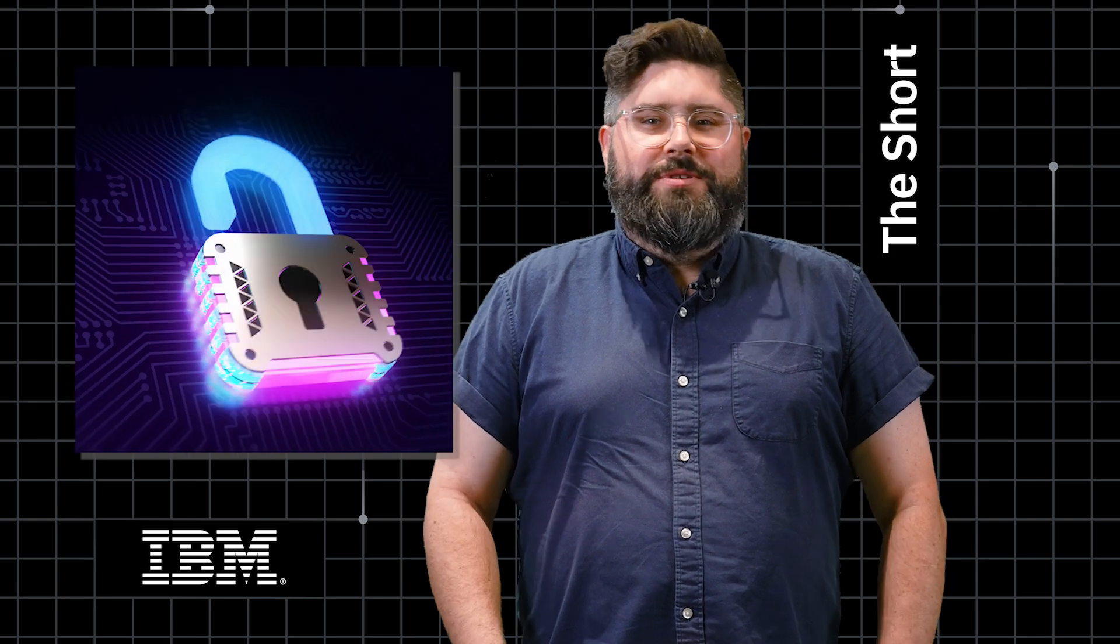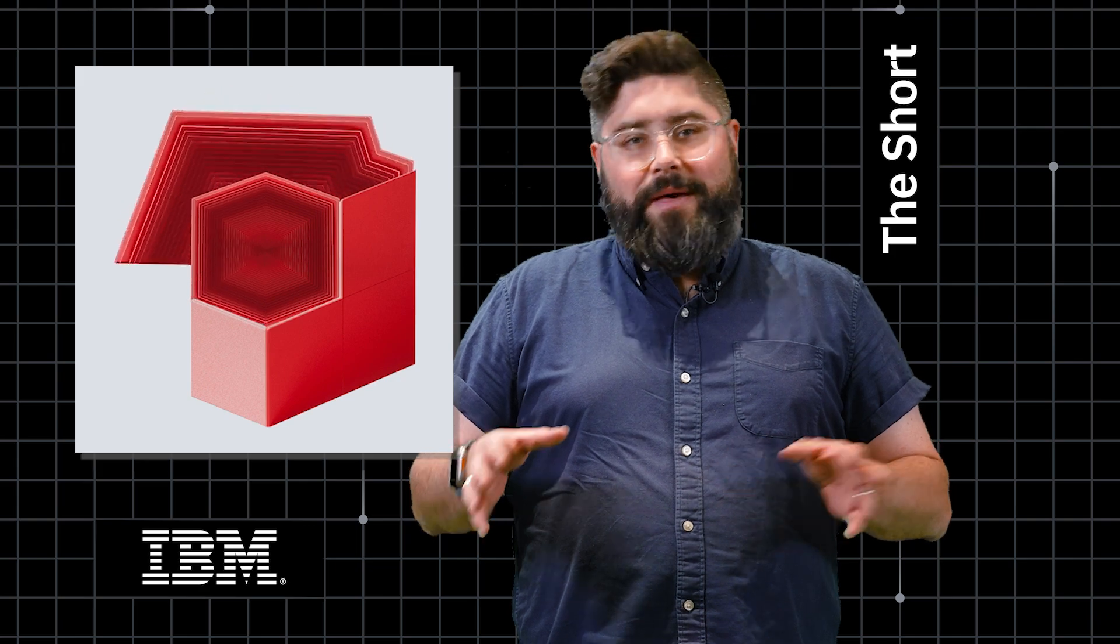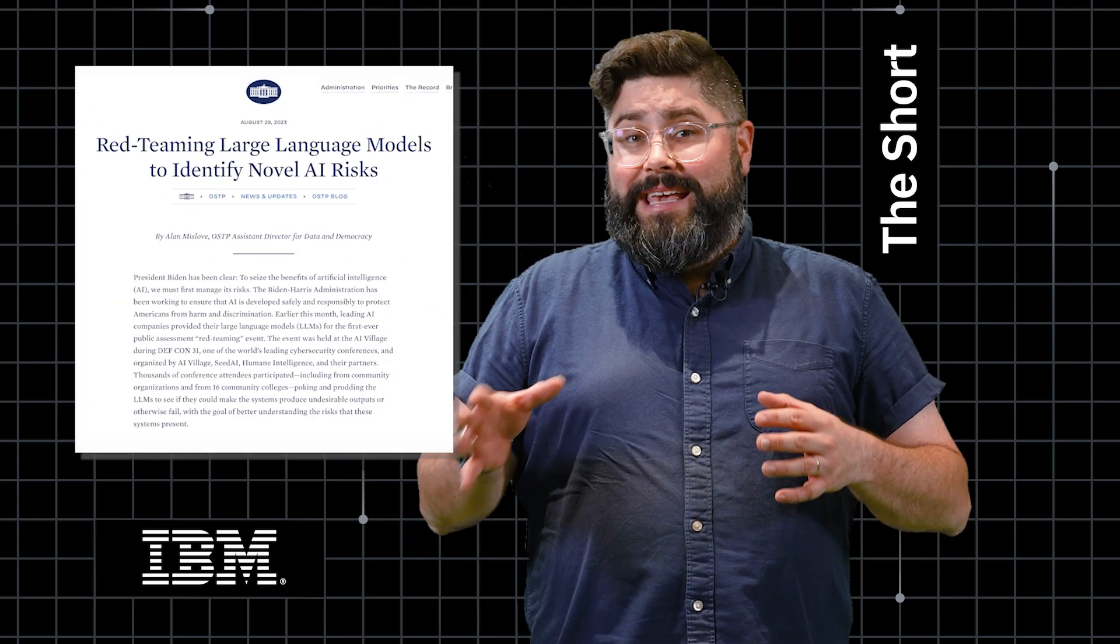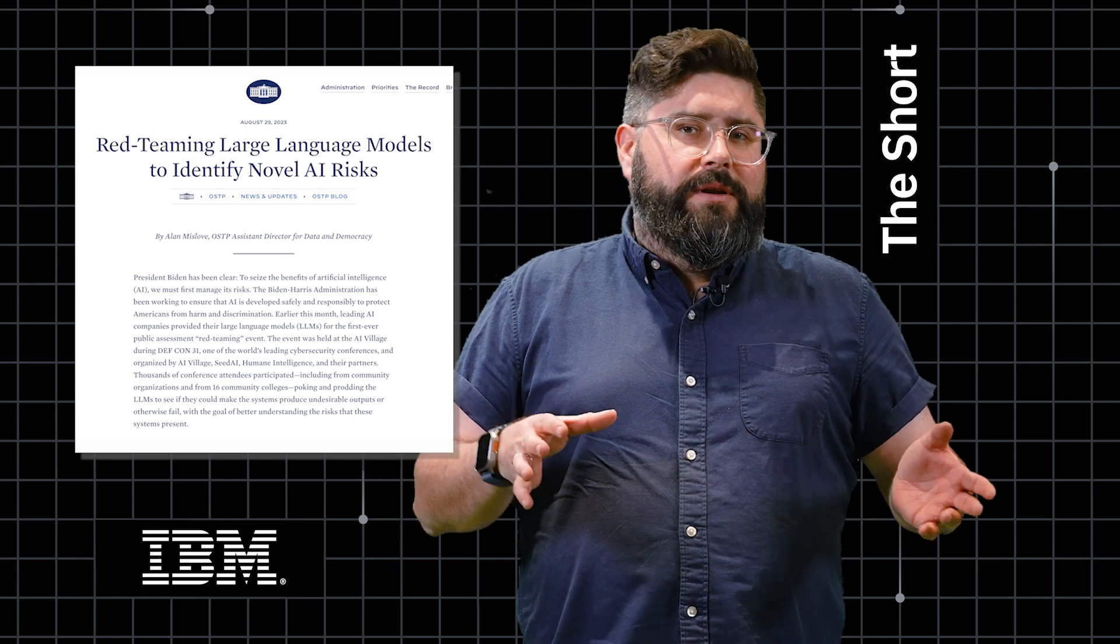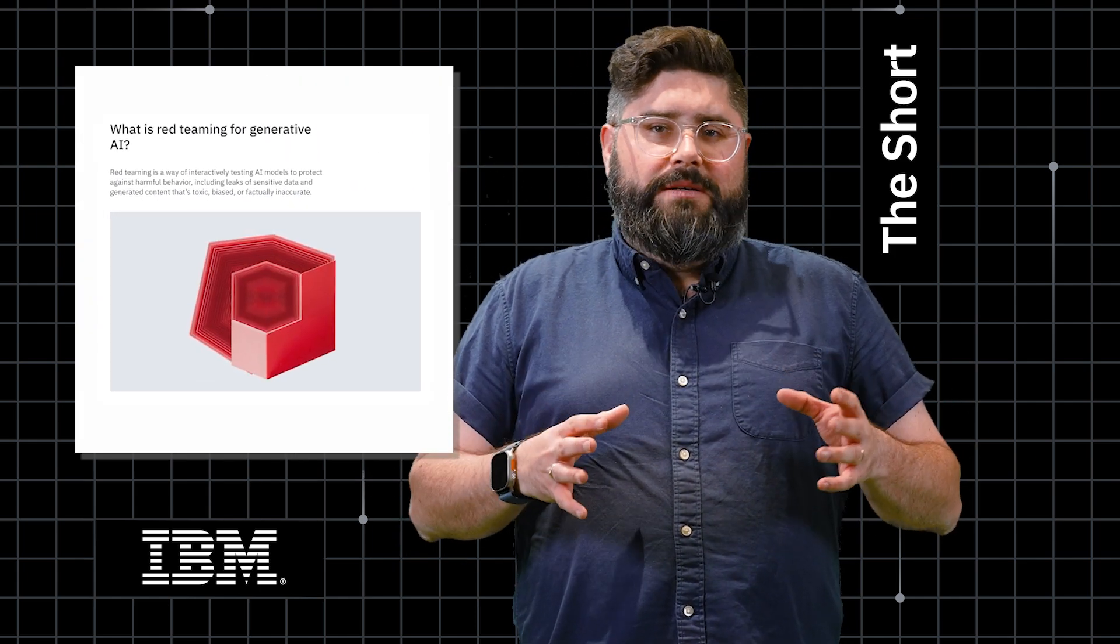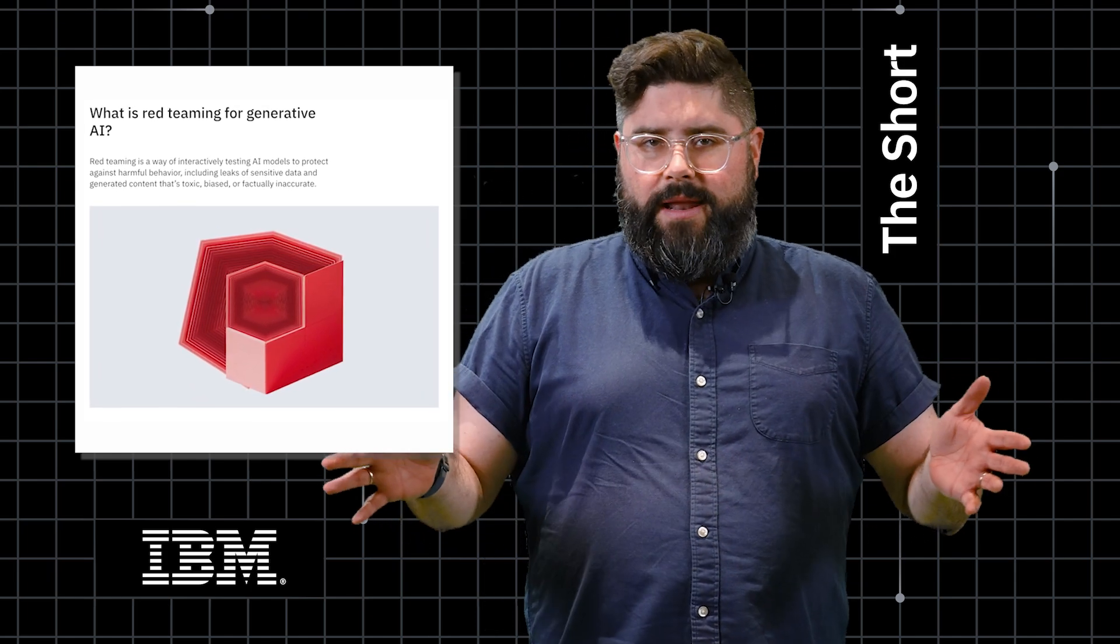Either way, the security industry adopted the term to explain its work protecting against malicious actors. And now it's being used in a similar way by the AI sector. Starting with a report out of the White House last year, RED teaming has become a key area of focus for many, including security researchers at IBM. We're learning how to protect AI models against harmful behavior, leaking sensitive data, or generating problematic content.